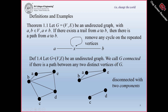For an undirected graph, we call G connected if there is a path between any two distinct vertices of G. A graph is said to be connected whenever any two vertices you pick have a path between them. Otherwise, we say the graph is disconnected with multiple components. For example, here are three separate graphs — it is a disconnected graph with three components.